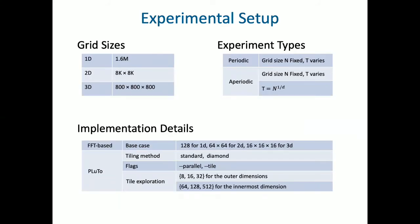For grid sizes, we used 1.6 million for one-dimensional grid, 8K x 8K for two-dimensional grid, and 800 x 800 x 800 for three-dimensional grid. In terms of experiment types, we have two types of boundary conditions. One is periodic and the other is aperiodic. For periodic, we keep the grid size n fixed and vary time, which is t. For aperiodic, we have two different types of experiments. One is we keep n fixed and t varies, and the other one we vary both t and n. T is the size of grid in each dimension, which is n^{1/d}.